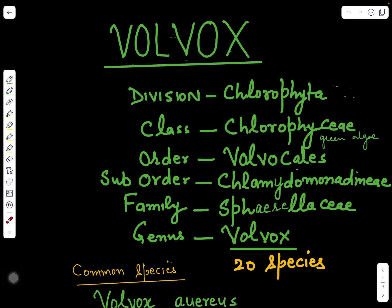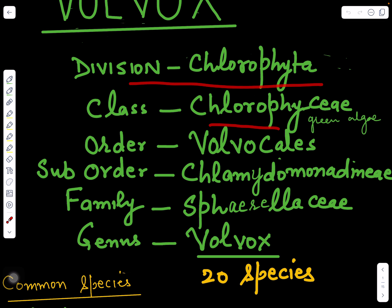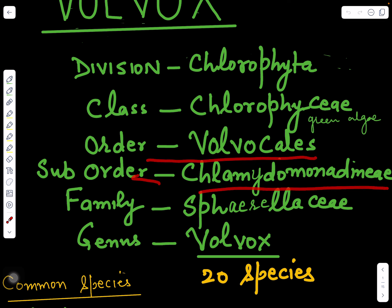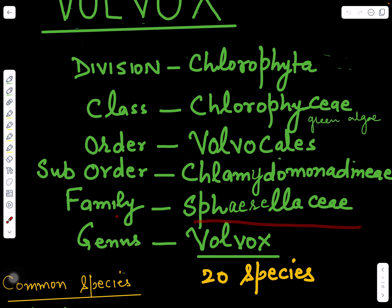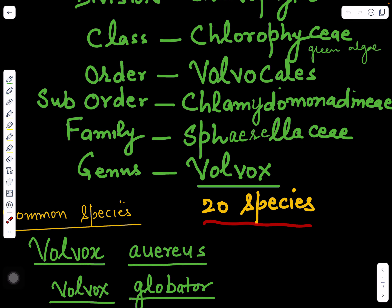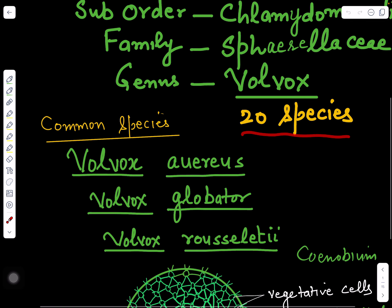In this video we will discuss Volvox. Volvox is a member of green algae. If we classify Volvox, this belongs to division Chlorophyta, class Chlorophyceae, also called green algae because this algae is green in color. It has pigments chlorophyll a and chlorophyll b. This belongs to order Volvocales, sub-order Chlamydomonadini, and family Sphaerulaceae, genus Volvox.